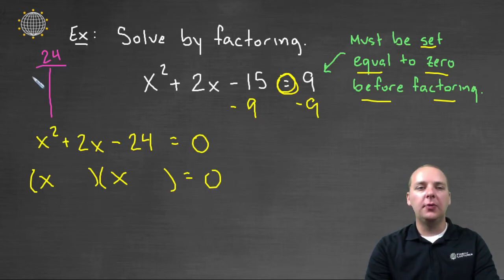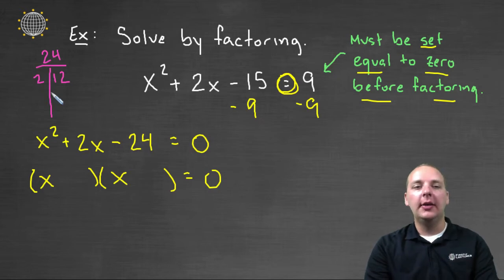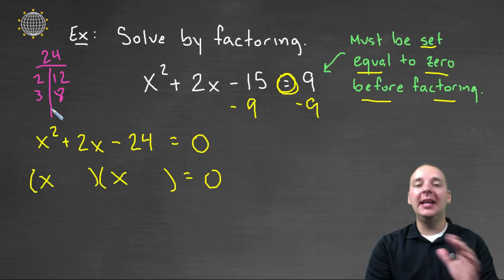So factors of 24, you could have 2 times 12. If you could make the signs plus or minus be anything you wanted them to be, there's no way to combine those to get 2. So I'm going to keep looking. 3 times 8 is also 24. But with positives and negatives in any combination I wanted, that can't give you 2 either.